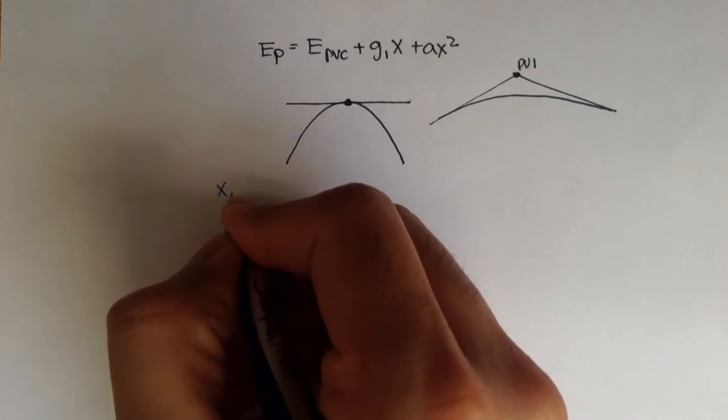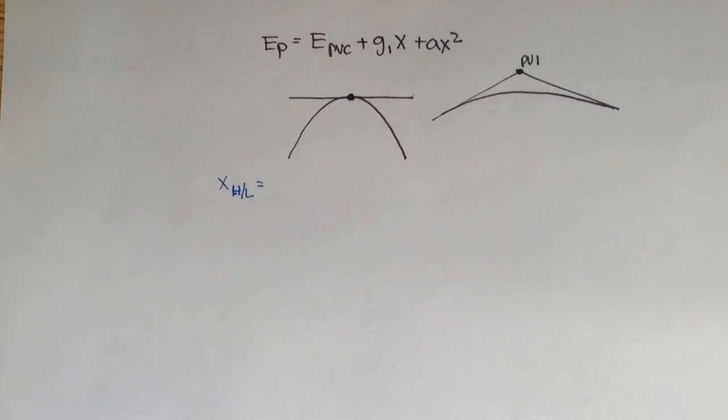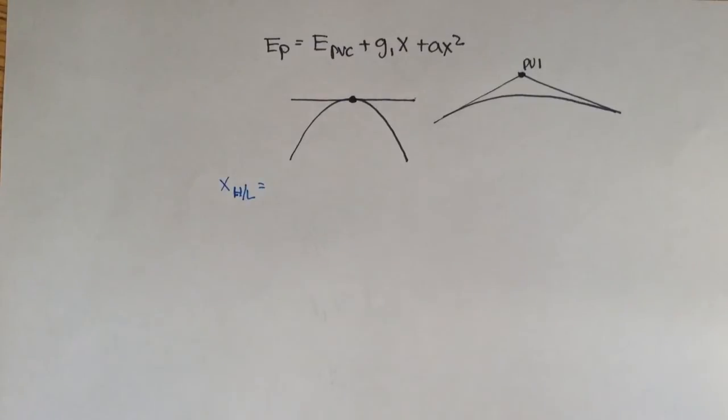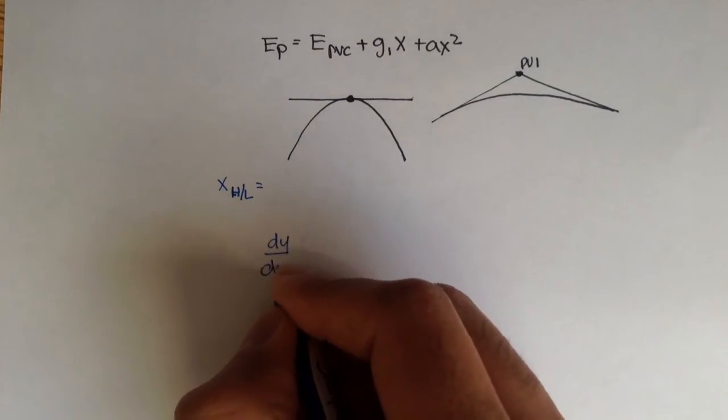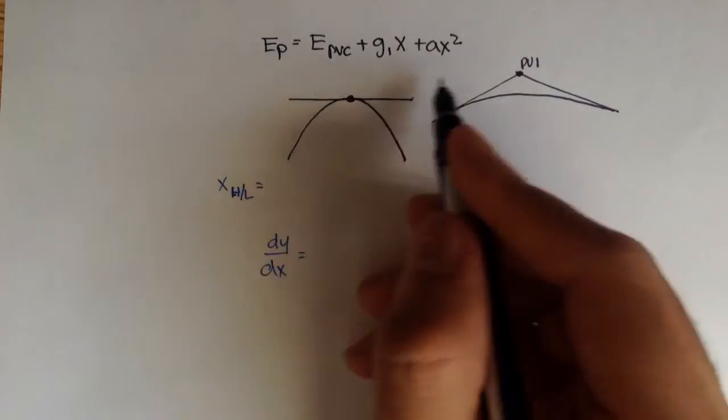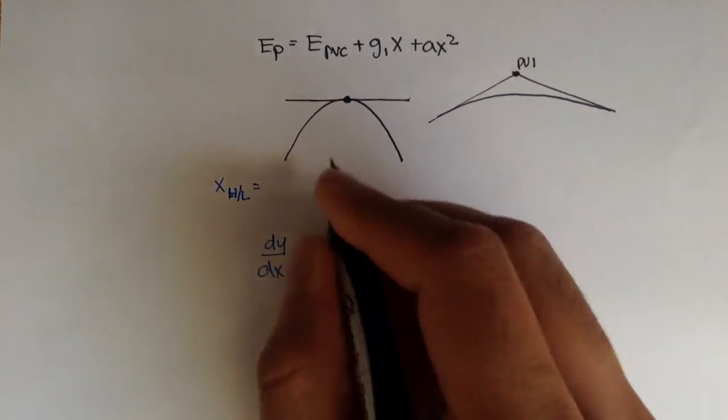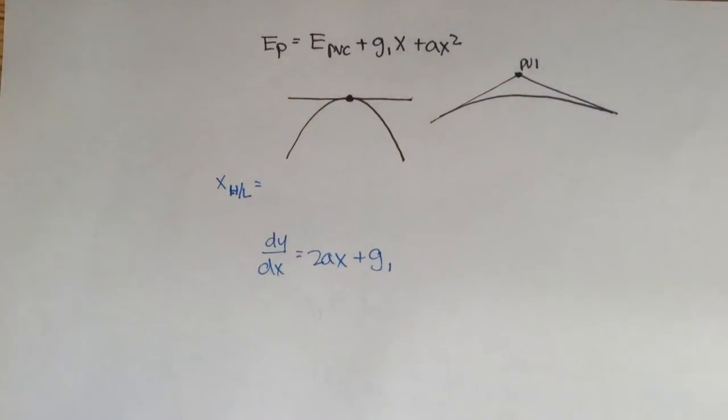x, x high low. That's how I'll denote that point. That's going to be where the slope is equal to 0. And slope is first derivative, right? So if we derive this equation just once in respect to x, we'll get dy dx is equal to 2ax, I'm just rewriting it a bit differently, plus grade 1, right?